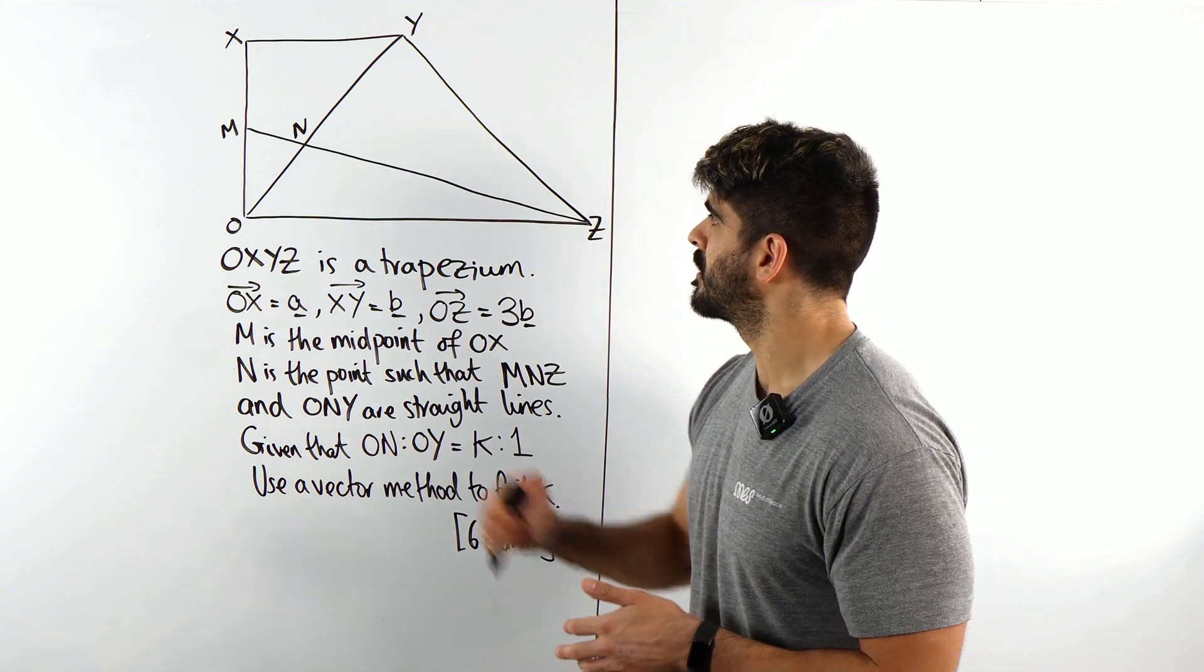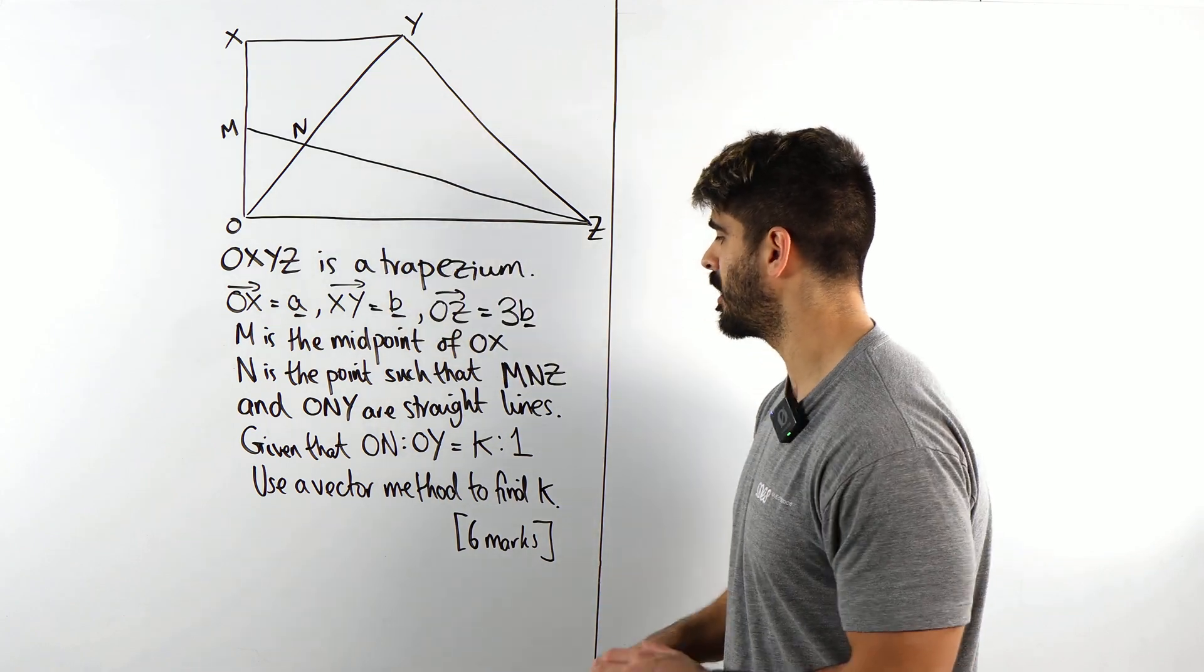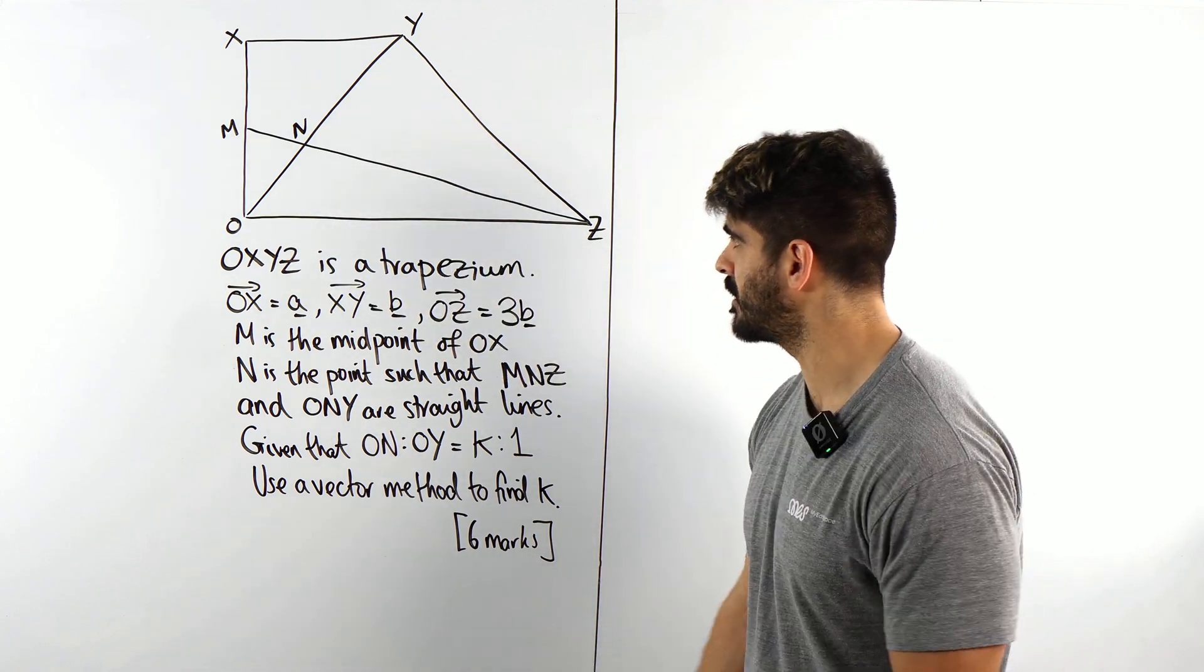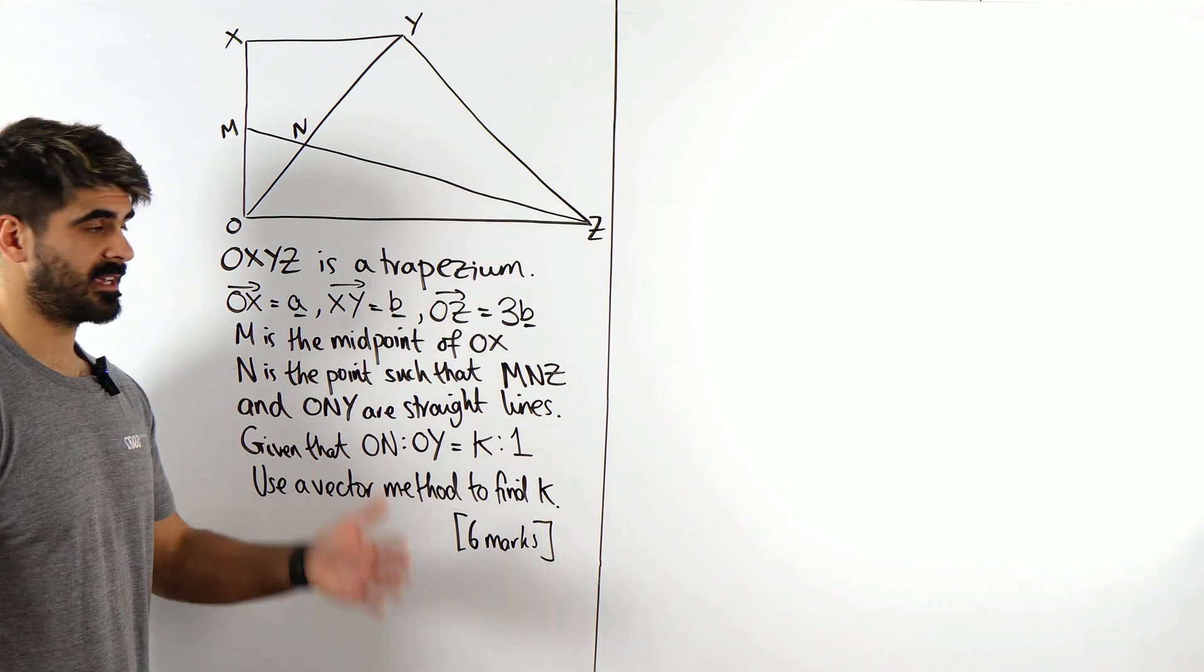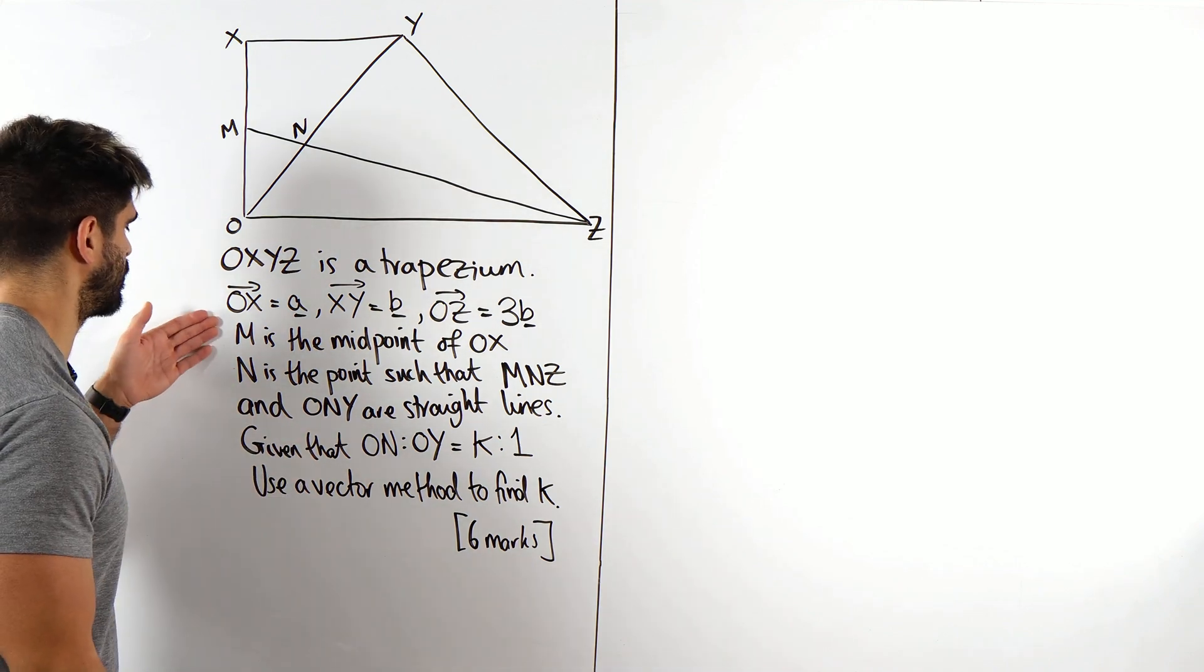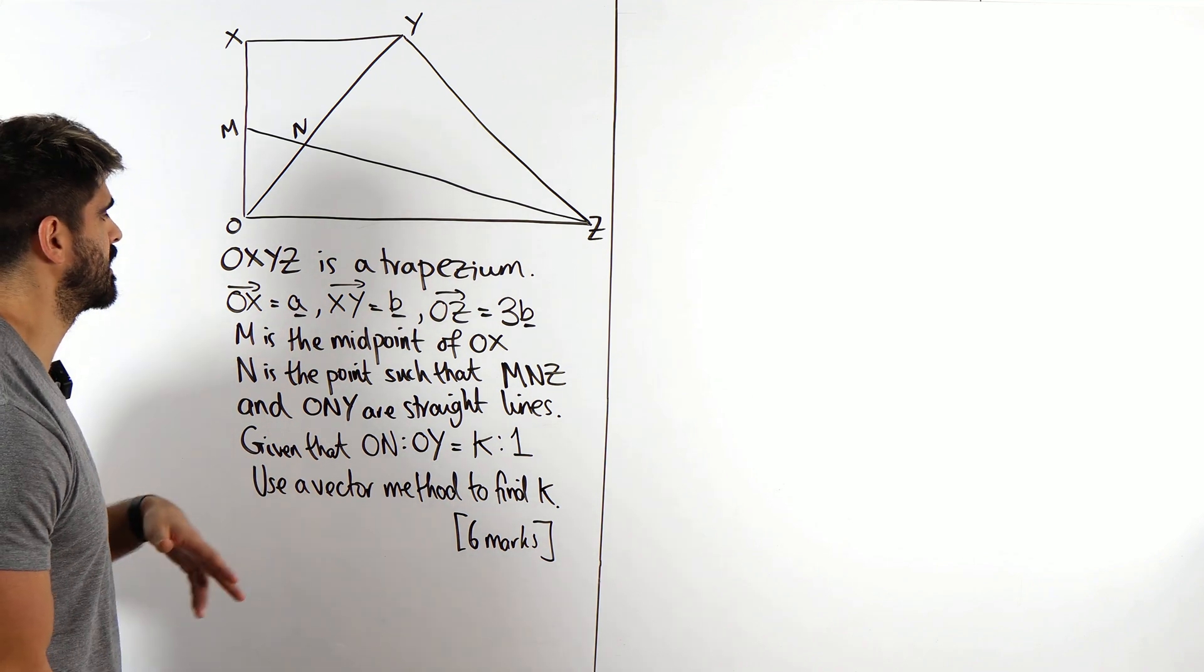Given that O to N, O to Y is K to 1, use the vector method to find the value of K. So let's just label our diagram and read again. This is what we should be doing in the exam. For these hard questions you should read it once, start annotating, read it again.